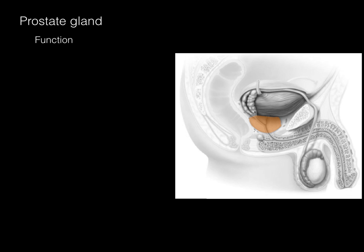The prostate gland surrounds the prostatic urethra and sits right below the bladder. It is approximately 2 by 3 by 3 centimeters in size and contains tubular alveolar glands with dense connective tissue and different layers. The prostate gland produces prostatic fluid containing glycoproteins and other enzymes, which during expulsion and ejaculation helps give motility to sperm.